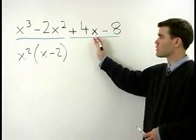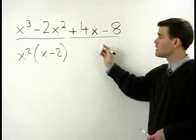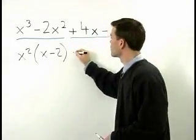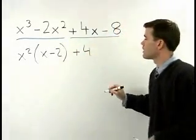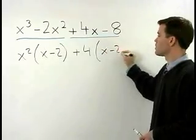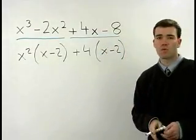The greatest common factor for positive 4x minus 8 is positive 4. That leaves you with x minus 2 also inside the parentheses.